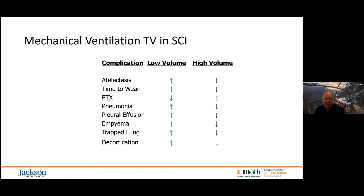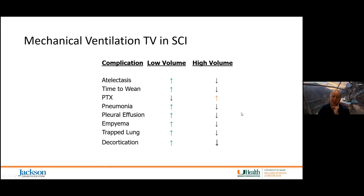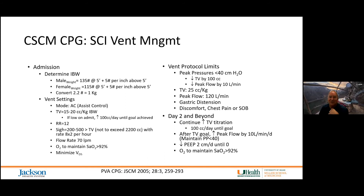The bottom line on mechanical ventilation tidal volumes: those with high volumes have reduced atelectasis, shorter time to wean, reduced episodes of pneumonia, pleural effusion, empyema, trapped lung, and decortication. They do, however, have an increased incidence of pneumothorax, which needs to be considered. The recommended vent management from the Consortium Clinical Practice Guidelines is: determine ideal body weight, then use assist control with high tidal volumes of 15–20 cc/kg.